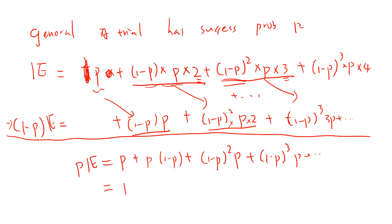So what we have is pE equals p times [1 + (1-p) + (1-p)² + (1-p)³ + ...].